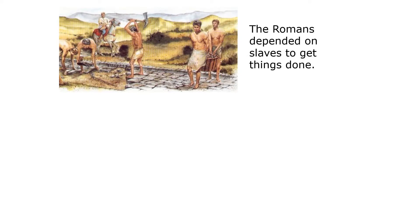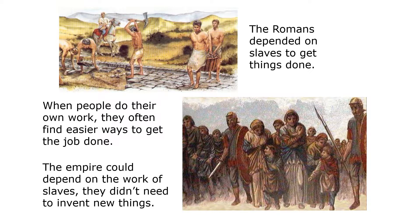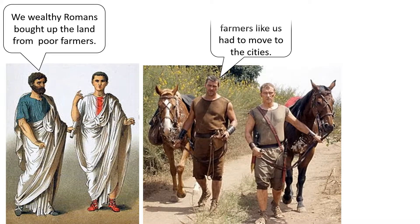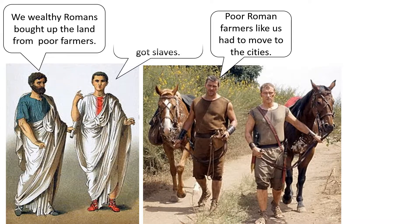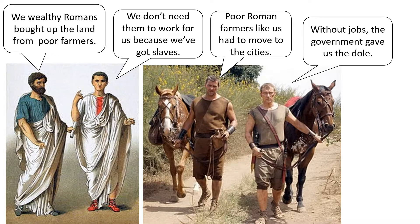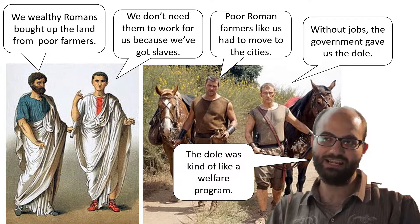The Romans depended on slaves to get things done. When people do their own work, they often find easier ways to get the job done. Since the empire could depend on the work of slaves, they didn't need to invent new ways. Wealthy Romans bought up the land from poor farmers, who had to move to the cities. Without jobs, the government gave them the dole — a kind of welfare program.